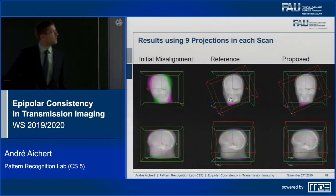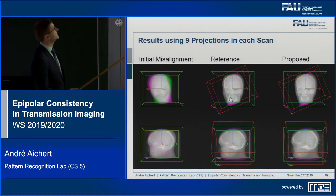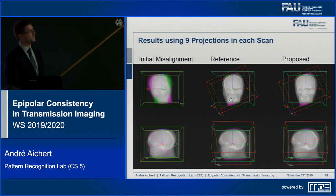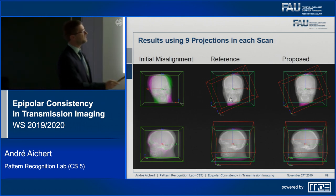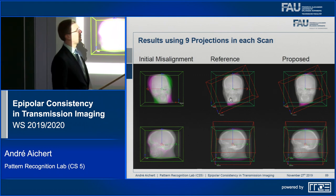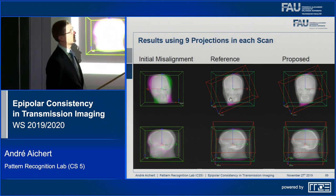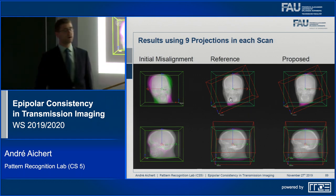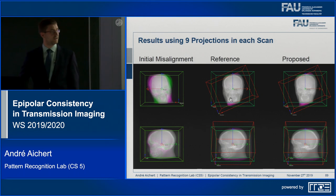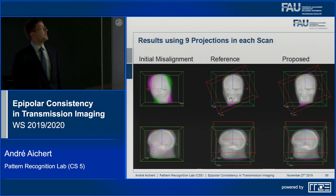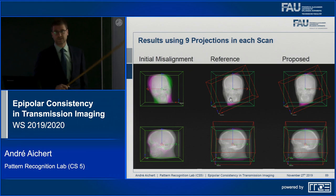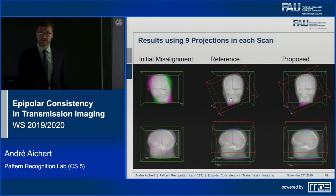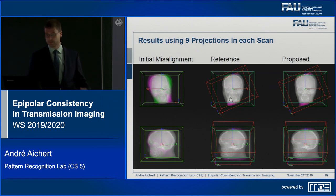The end result shows the reference, the initial misalignment — lots of green and purple because the two images don't match — and the proposed result, which closely matches the reference. Where the images are gray there is no color difference, indicating correct alignment. Remarkably, we used only nine projections out of several hundred and still achieve the same result as intensity-based registration that also performed a full reconstruction.